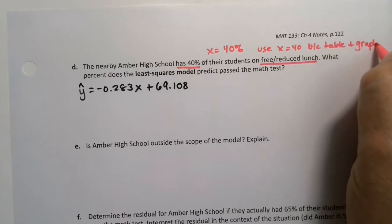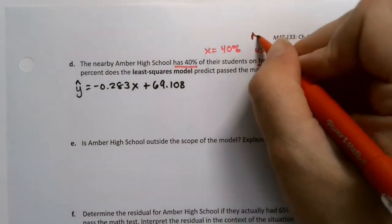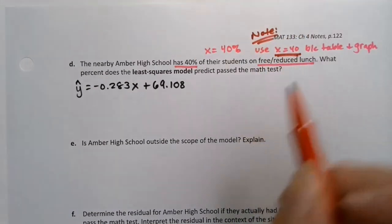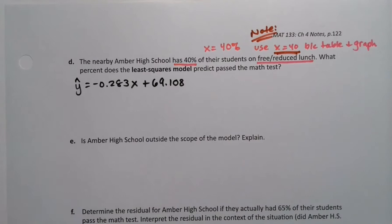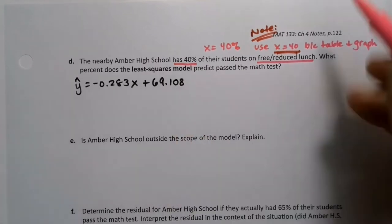So that means that you want to as well. So use x equals 40 because of the table and the graph. And that's a good thing to note for your own study. So make a really big note of that. A lot of times students will think just by instinct, I'm just going to use 0.4. No, 0.4 would not be appropriate here. So we're going to use x equals 40 because the table and the graph use whole numbers.